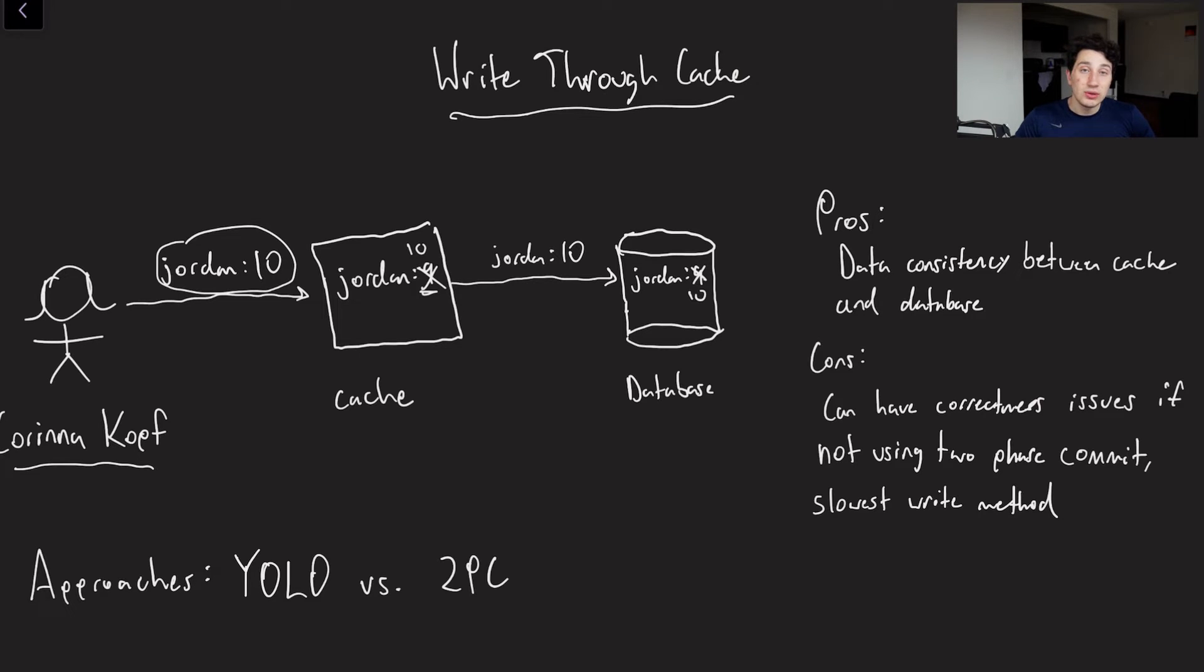Now, obviously, something should be standing out to you here, which is that it is always possible that either this write gets made, and then this network request doesn't go through, or just any other thing could happen. This write gets made, and this cache goes down or something,